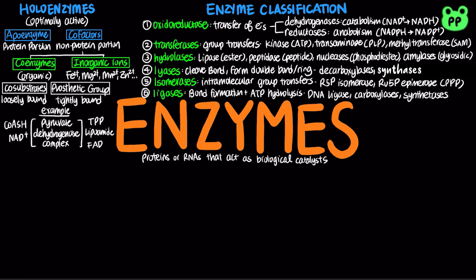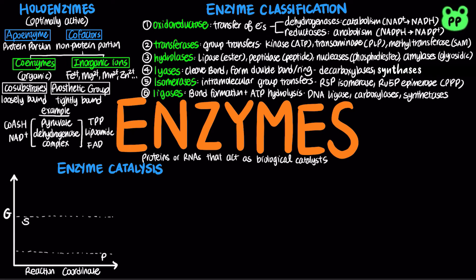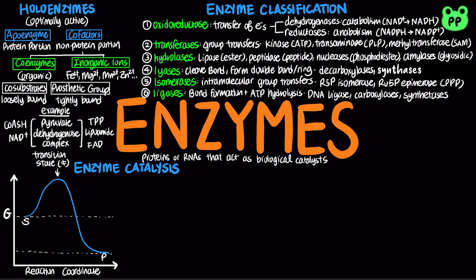Uncatalyzed biological reactions tend to be slow. An enzyme provides an optimal microenvironment within which a given reaction can occur more rapidly. In a reaction coordinate diagram, the vertical axis represents the amount of Gibbs free energy, and the horizontal axis represents the progressive chemical changes as substrate, abbreviated as S, is converted to product, abbreviated as P. At the top of the energy hill is a point at which decay to the substrate or product state is equally probable, known as the transition state. The difference between the energy levels of the substrate and the transition state is the activation energy, which is the energy required to initiate a reaction.